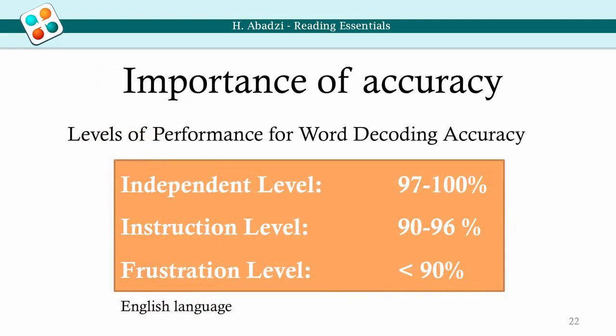Accuracy is as important as speed. When students make many mistakes, they misunderstand, must re-read, and thus use up their working memory. For effortless reading, nearly 100% accuracy is needed. Accuracy easily rises to 100% in consistently spelled languages using the Roman script. By contrast, syllabic scripts are more visually complex, and students may make many mistakes even in grade 4. To improve accuracy, students need corrective feedback, and many poor students get very little.